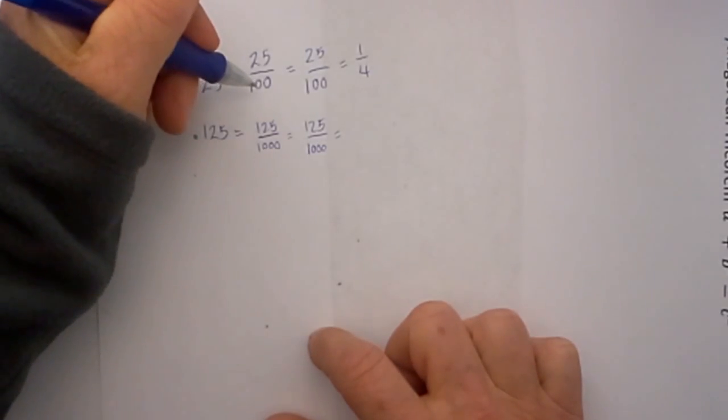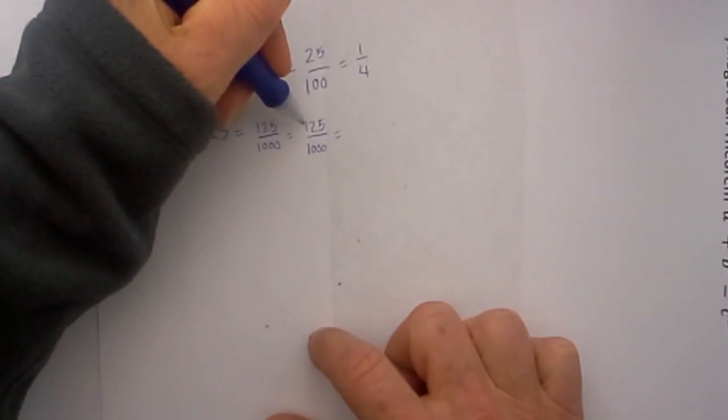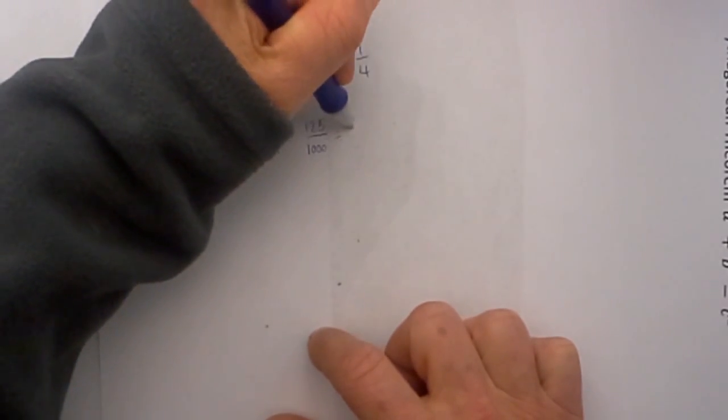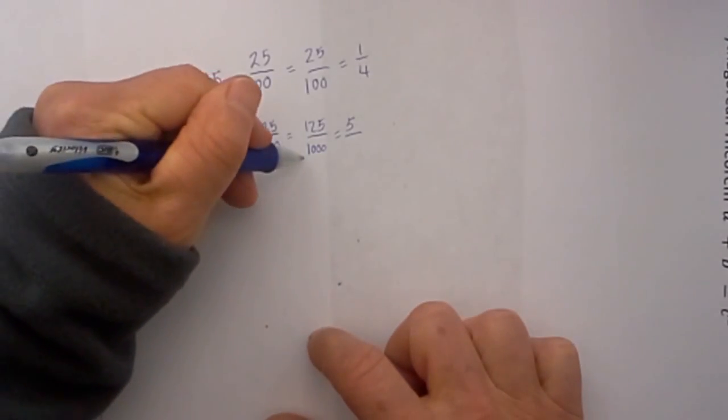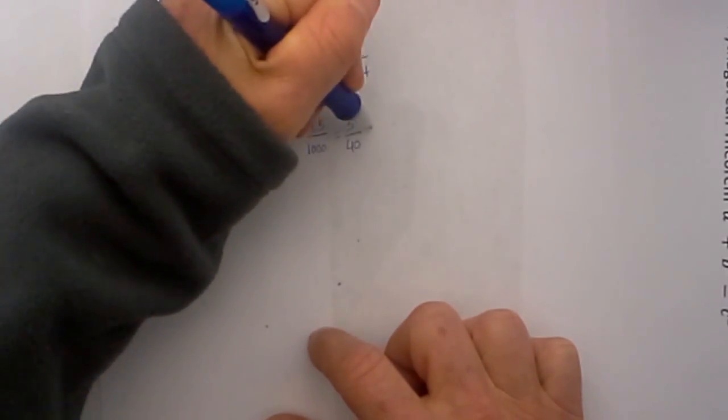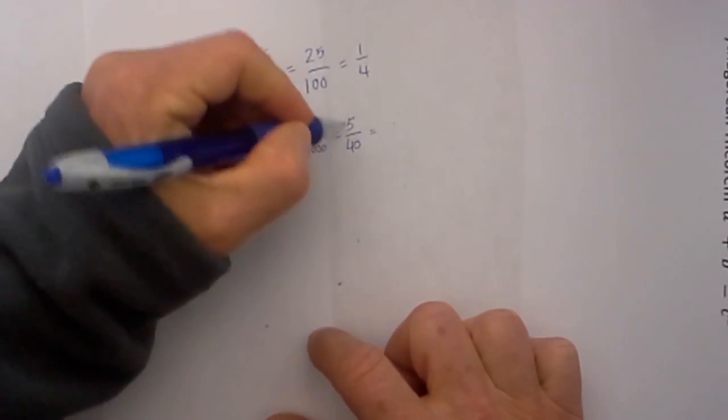So why don't we go ahead and do this - we can reduce it by 25. So 25 will go into 125 five times and then 25 will go into 1000 forty times. And then I can further reduce this - 5 will go into 5 one time and 5 will go into 40 eight times.